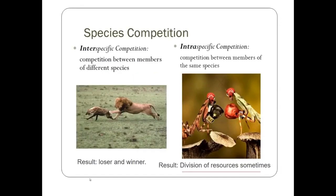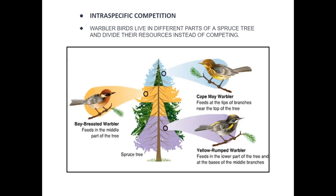We break competition down into two kinds. Interspecific competition is between two different species, such as the lion and tiger example — there is always a losing side, the weaker one. And intraspecific competition is between the same species, such as the elephants. In intraspecific competition, the results are not always certain — there could be a loser and winner, but most of the time there is sharing of resources. An example of intraspecific competition is warbler birds: there are three kinds of warbler birds who live in the same tree, but each feeds on a different food source, dividing resources among themselves so the species as a whole benefits.